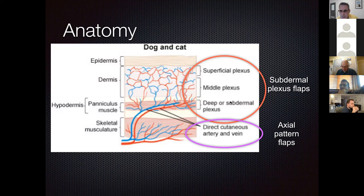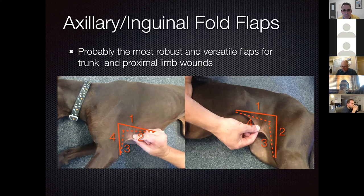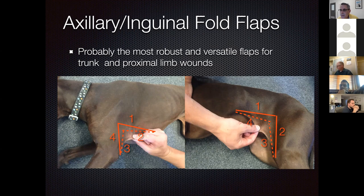An axial pattern flap has a direct cutaneous artery and vein supplying the entire flap—that is the key difference from a random or subdermal plexus flap. Axial pattern flaps survive to a much greater extent than random flaps. For an axillary or inguinal fold flap, it is the most robust and versatile flap for trunk and proximal limb wounds. The flank fold essentially has four margins; you cut three and leave one intact as the vascular bridge to the recipient site.